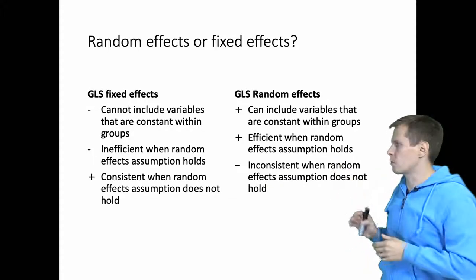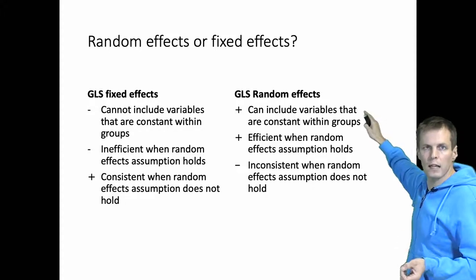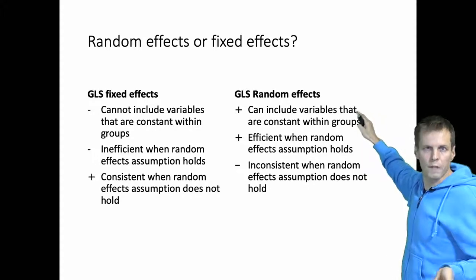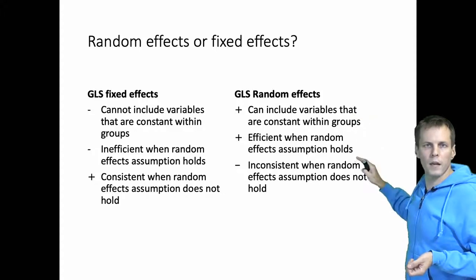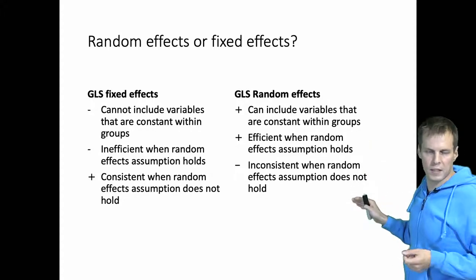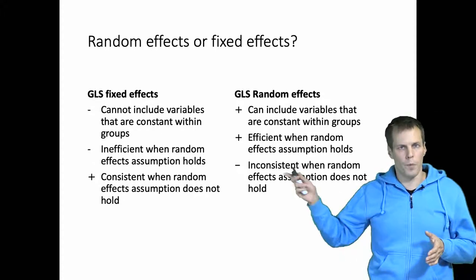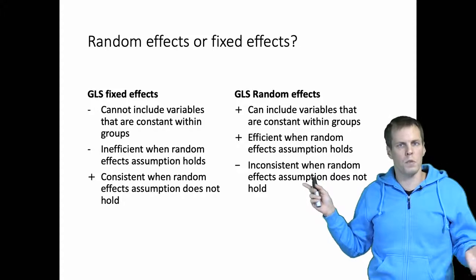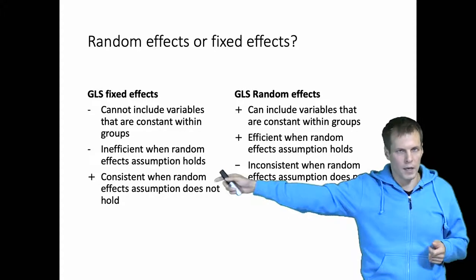The GLS random effects approach can include, as an advantage, variables that vary only between clusters. So you can model between effects and contextual effects. This is efficient compared to GLS fixed effects when the random effects assumption holds, but it's inconsistent and biased if the random effects assumption doesn't hold. In practice we quite often use the Hausman test to compare these two modeling approaches and then pick the random effects approach if the Hausman test is not rejected.